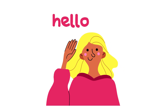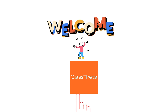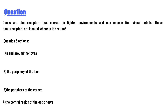Hello everyone, I am Akrash, your teacher. I welcome you to class. Our today's question is: cones are photoreceptors that operate in light environments and can encode fine visual details. These photoreceptors are located where in the retina?